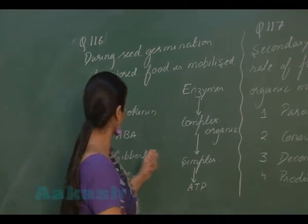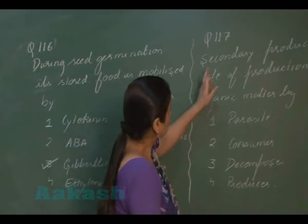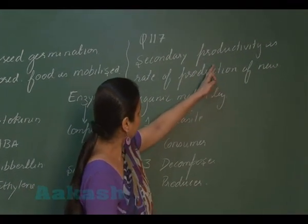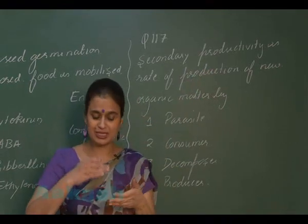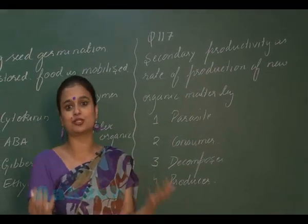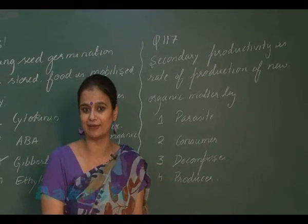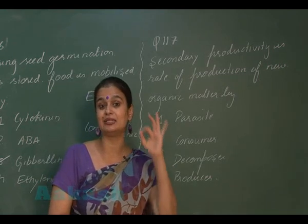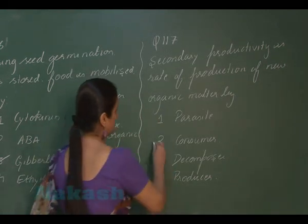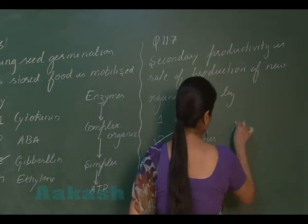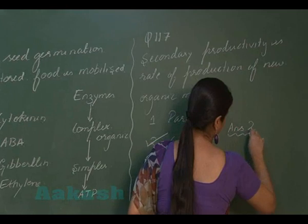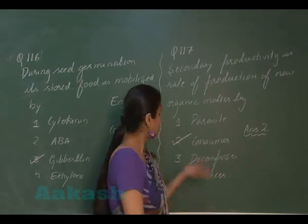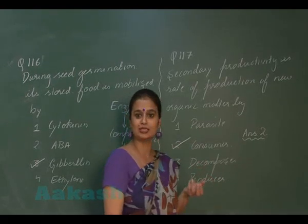Coming to question number 117, we have to talk about secondary productivity. Primary productivity means the production of organic matter at the producer level. Secondary productivity is the production of organic matter at the consumer's level. So the right option for question 117 is 2.